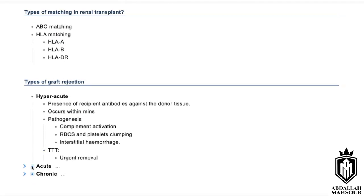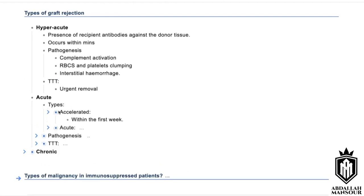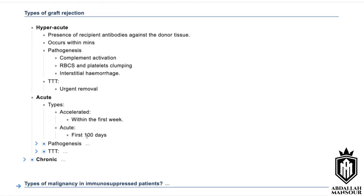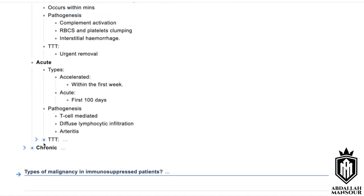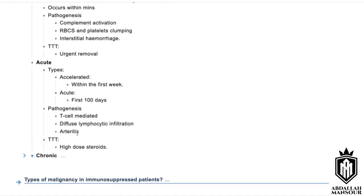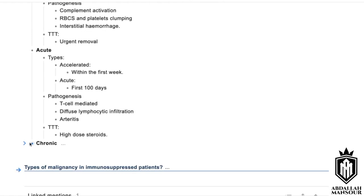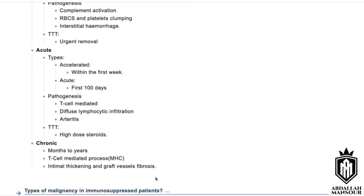Acute rejection has two subtypes: acute accelerated, occurring within the first week, and acute proper, occurring within the first 100 days. Both are T-cell mediated with lymphocytic infiltration, and treatment is high-dose steroids. Chronic rejection can happen from six months to years and involves T-cell mediated intimal thickening of graft blood vessels.